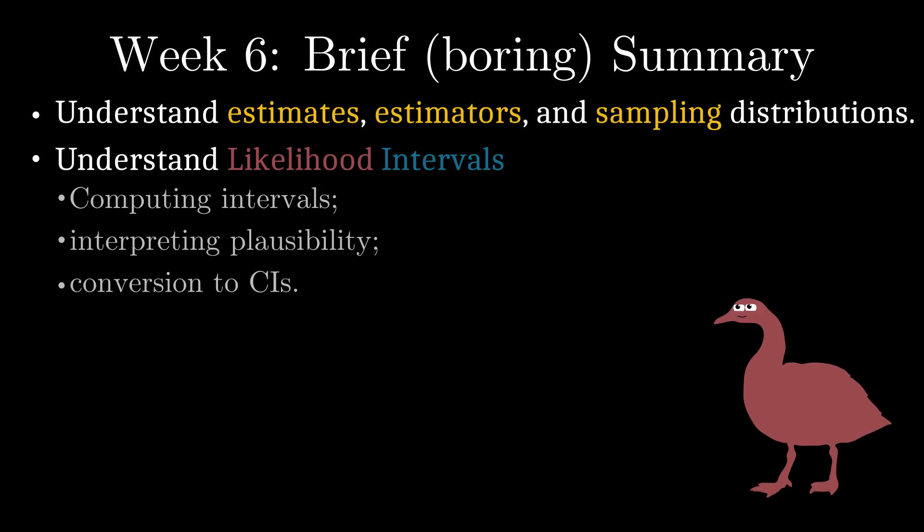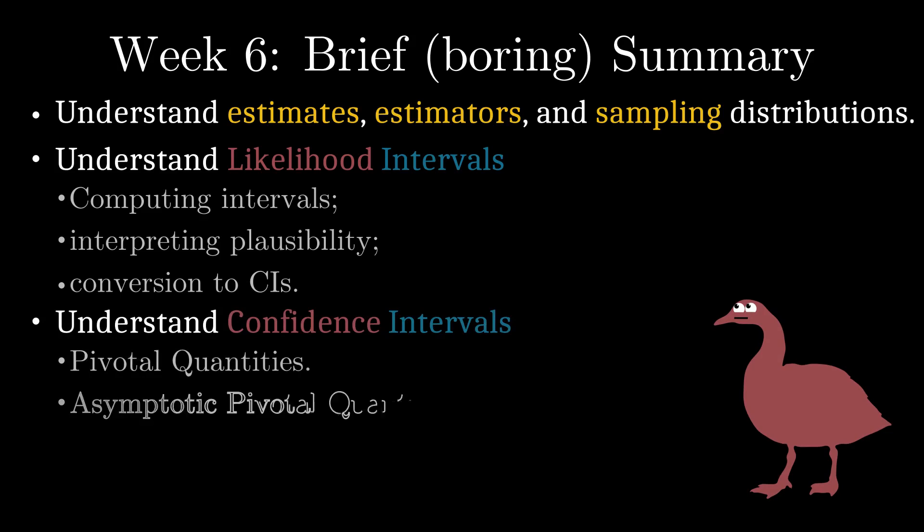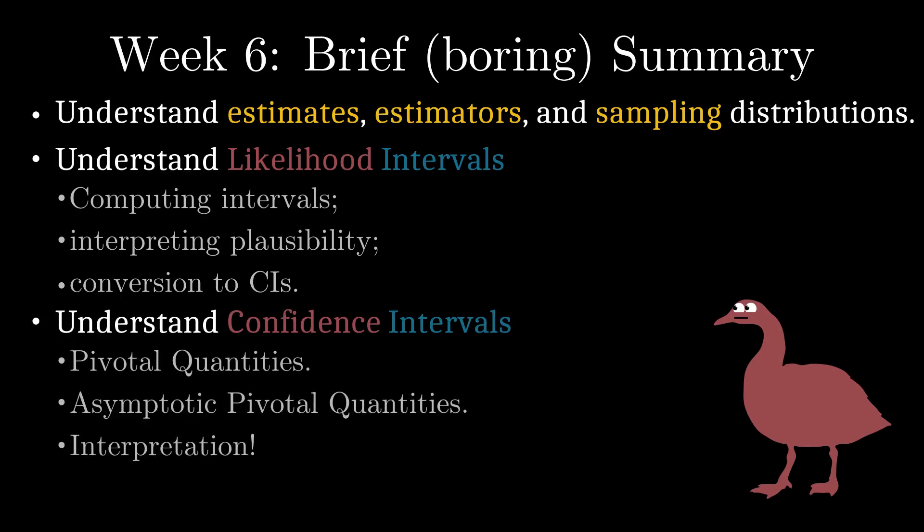Though this is jumping slightly ahead, you should be able to use likelihood intervals as confidence intervals and understand the asymptotic pivotal quantity that they produce. Confidence intervals were discussed focusing on the use of pivotal quantities and asymptotic pivotal quantities. You should understand how these intervals are constructed, understand what a pivotal quantity is with the ability to identify whether a given quantity is in fact a pivotal quantity, and use asymptotic pivotal quantities — especially those derived from the likelihood ratio or the CLT — to form interval estimates.